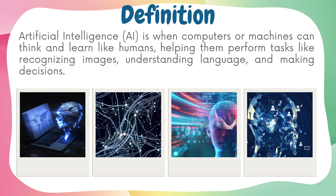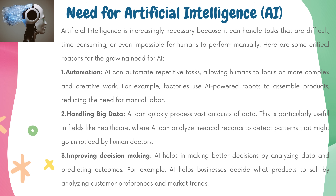Definition: Artificial Intelligence, AI, is when computers or machines can think and learn like humans, helping them perform tasks like recognizing images, understanding language, and making decisions. Need for Artificial Intelligence: AI is increasingly necessary because it can handle tasks that are difficult, time-consuming, or even impossible for humans to perform manually. Here are some critical reasons for the growing need for AI.